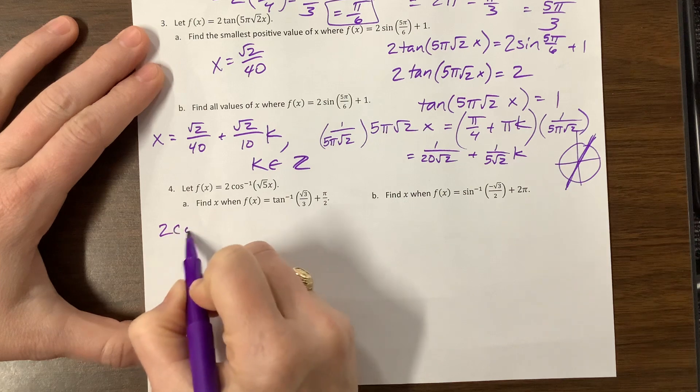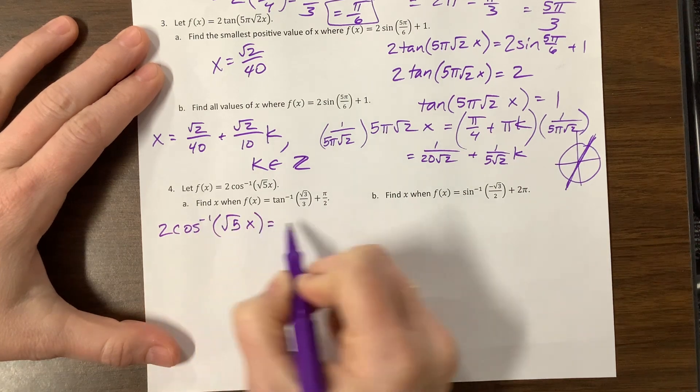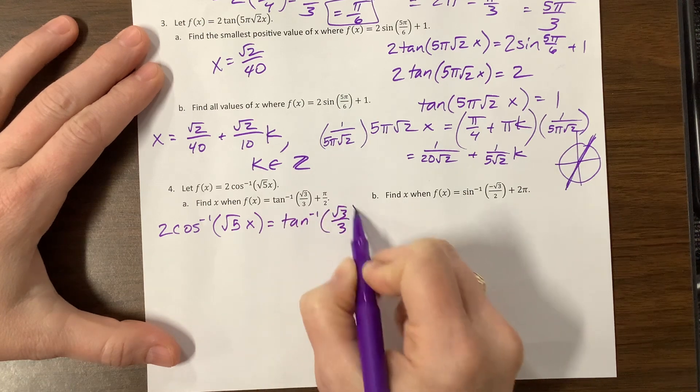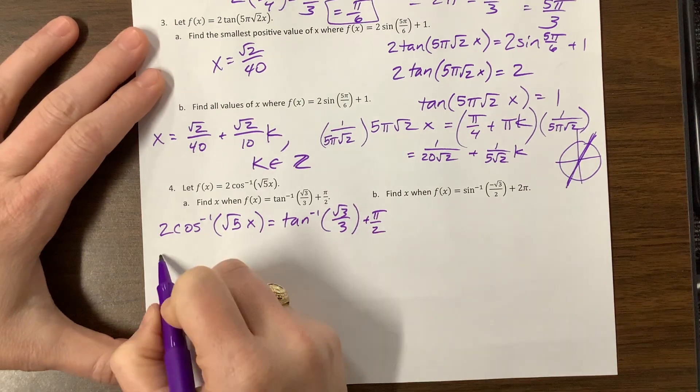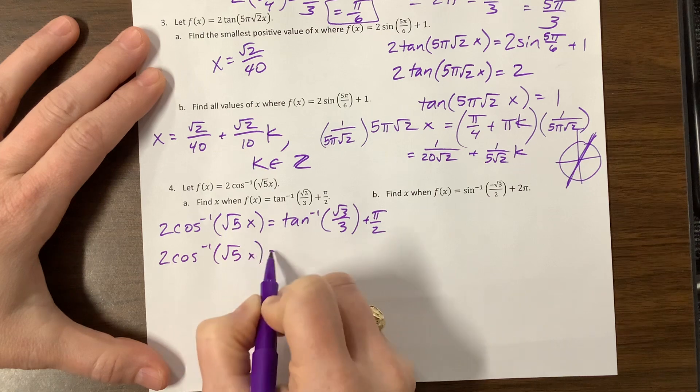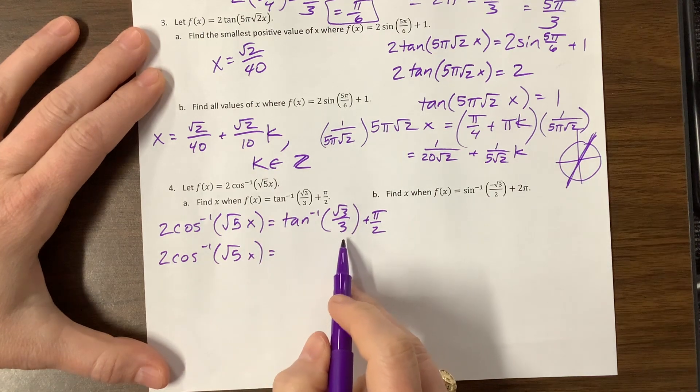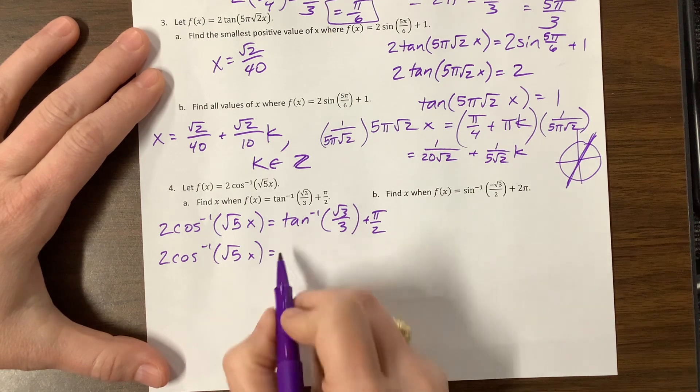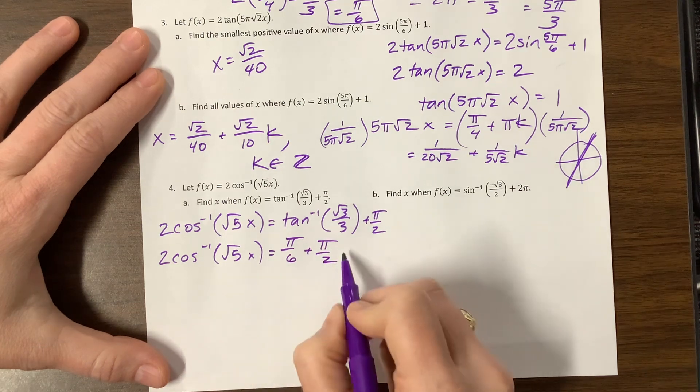But they're saying, when f(x) here is equal to the inverse tangent of √3/3 plus π/2. I was trying to be tricky, we'll see if I succeeded. So inverse tangent of √3/3, this is the slope, and that slope is less steep than 1. So this is the π/6 family.